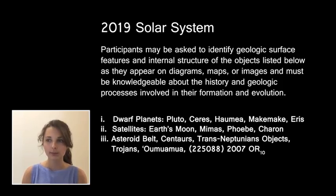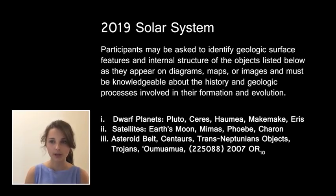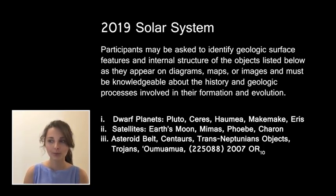The objects in the Solar System included in this year's event, listed in part one of the rules, are the dwarf planets Pluto, Ceres, Haumea, Makemake, and Eris, as well as the Earth's Moon, Saturn's moons Mimas and Phoebe, and Pluto's moon Charon. This year's event also includes Centaurs, Trans-Neptunian Objects, Trojans, Oumuamua, and 2007 OR10.